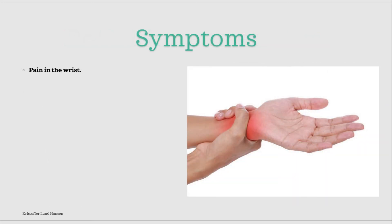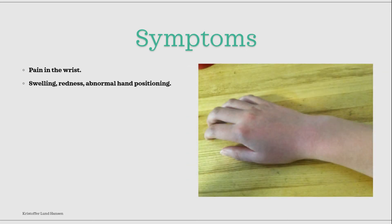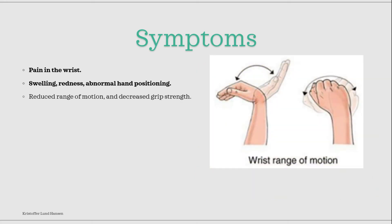The first and main symptom will of course be that it is quite painful. The wrist will also be swollen, it will have a reddish or bluish tinted color, and sometimes you might be able to see an abnormal positioning of the wrist. Lastly, it is typical to have reduced range of motion, so you have less movement of the hand and decreased grip strength.